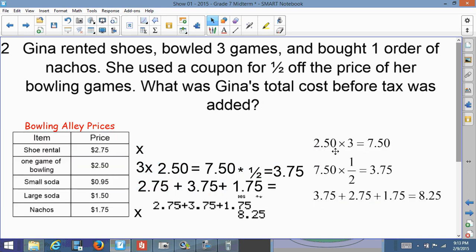And there's all the work that we just did again. We found how much she was charged for bowling, $2.50 per game multiplied by three, which gave us $7.50. And then we took half of that for the coupon, which gave her $3.75 for bowling. Then we added up the bowling, the shoe rental, and the nachos, and that's how we got $8.25.